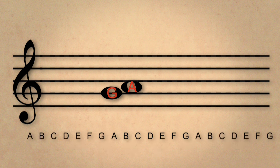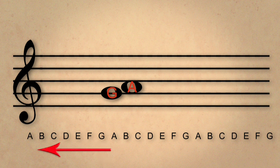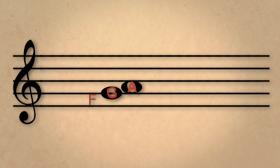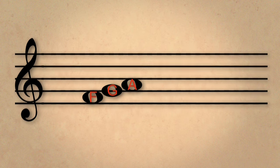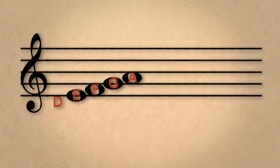And if we go down, we reverse the alphabet. So that line, the second line, becomes a G. The first space, an F. The lowest line, an E. And below the staff, a D.